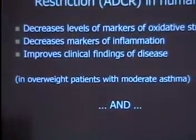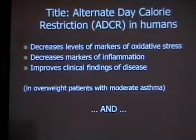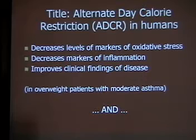This presentation is Alternate Day Calorie Restriction, presented in two parts. The three conclusions of Part 1 are: alternate day calorie restriction in humans decreases levels of the markers of oxidative stress, it decreases markers of inflammation, and it improves the clinical findings of a human disease.